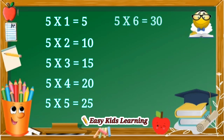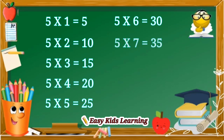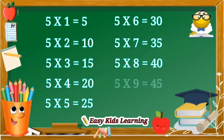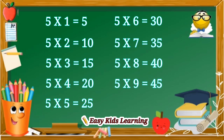Five sixes are thirty. Five sevens are thirty-five. Five eights are forty. Five nines are forty-five. Five tens are fifty.